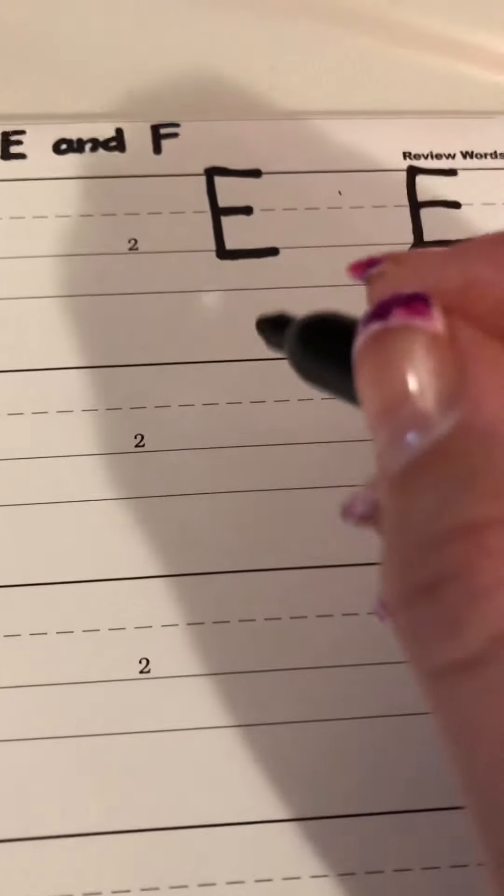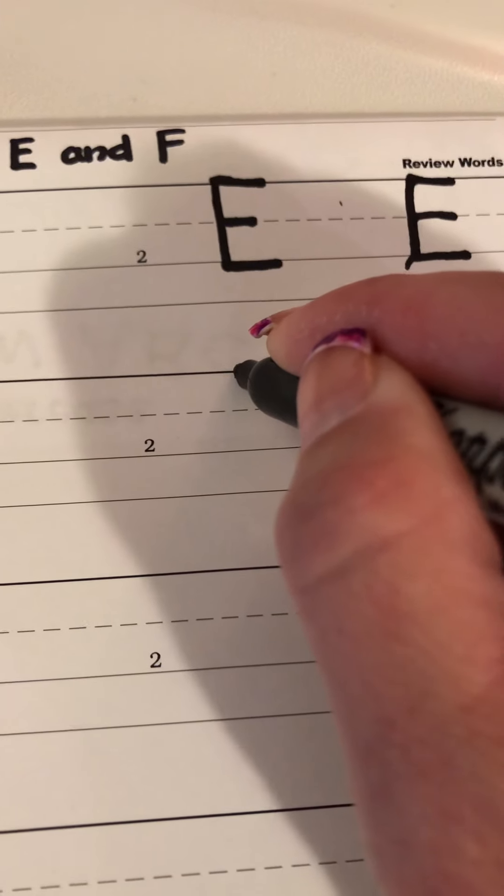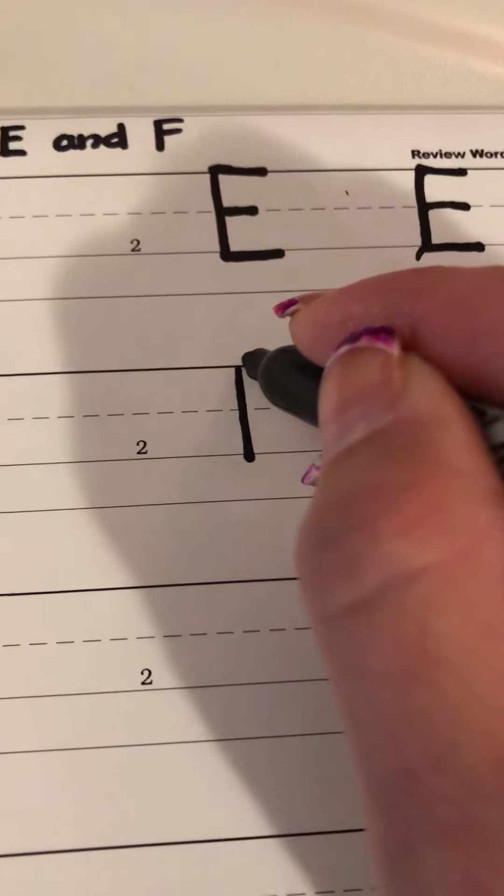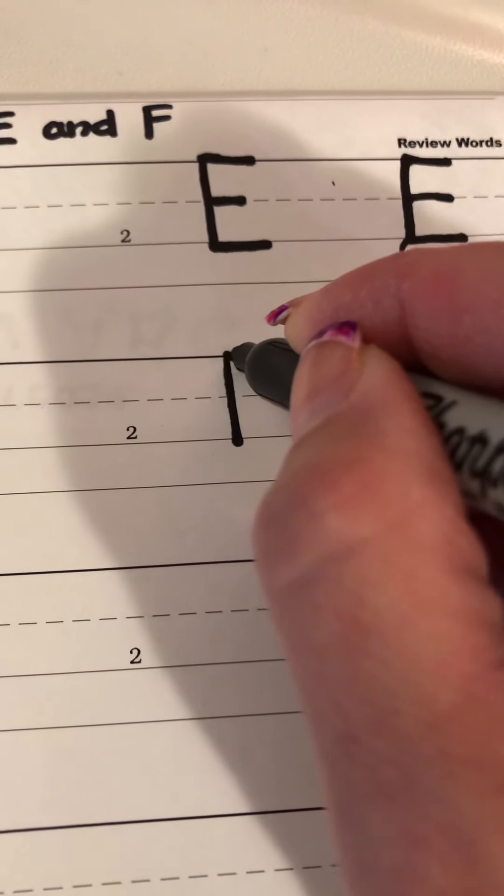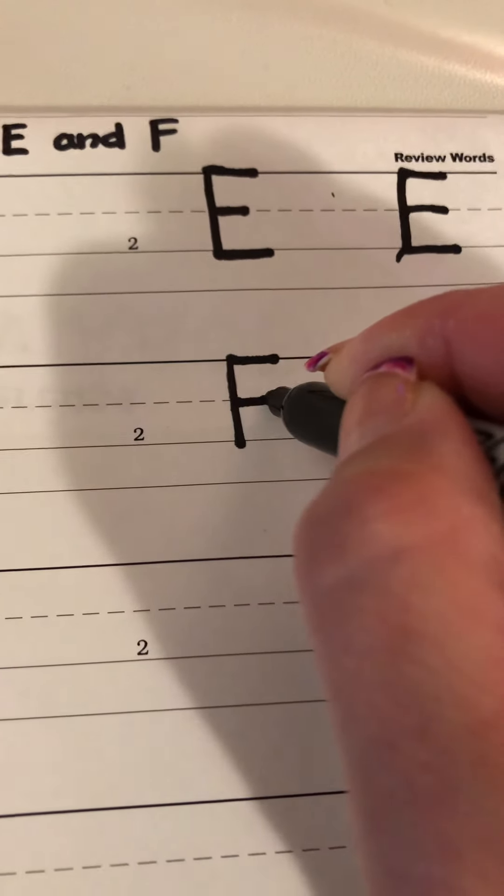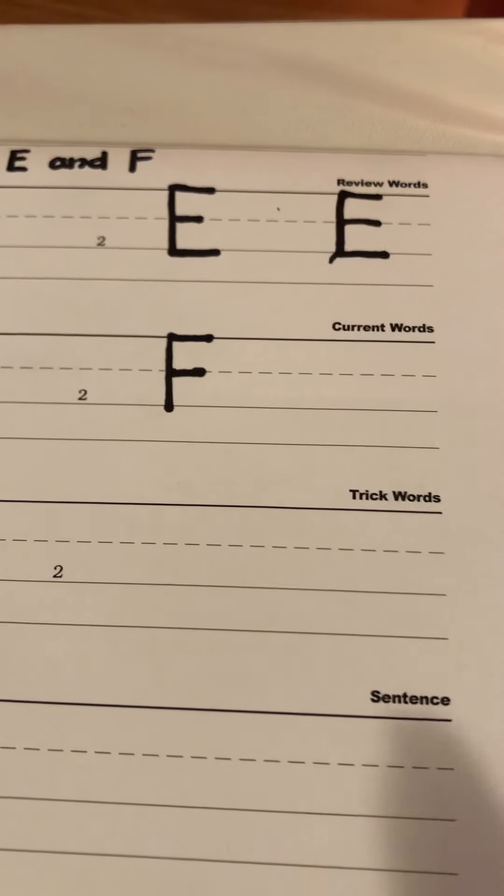Let's make another one just a little bit quicker. So we point to the top or the skyline. Go down to the grass line. Come back up and make a line at the top skyline. Then make another line on the middle or the plain line. And there you have F, fun, F. Excellent.